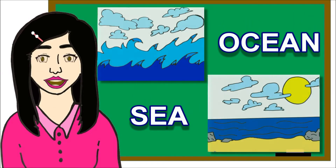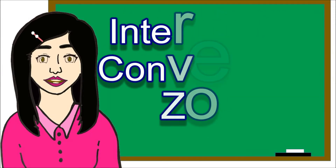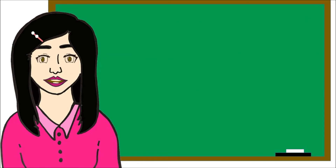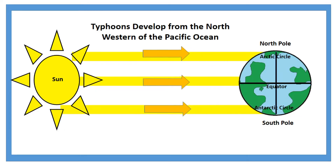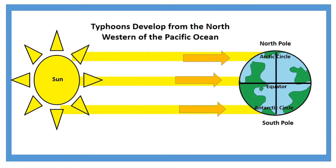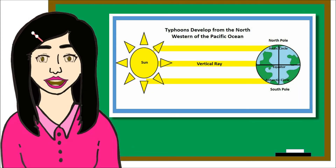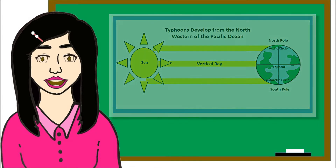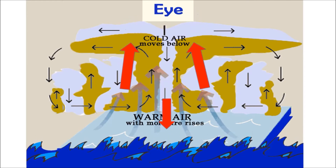Typhoons are usually formed in large bodies of water like oceans and seas through warm water. One source of typhoon formation is the ITCZ or the Intertropical Convergence Zone, located around the equator. The rays of the sun heat directly the countries near the equator. In order for a typhoon to form, it needs an abundance of warm water, mostly found in bodies of water like oceans and seas.